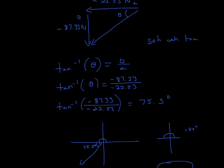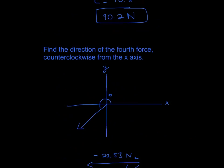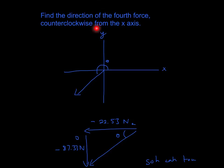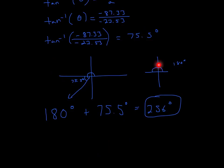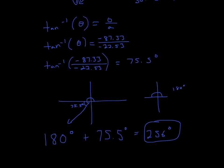Always ask: what does this answer mean? We found the small reference angle of 75.5 degrees, but the problem wants the full counterclockwise angle from the x-axis. Going back to the graph, a semicircle is 180 degrees, so we add: 180 plus 75.5 equals 256 degrees. That's three sig figs, and that's our final answer. Make sure your calculator is in degree mode, because that will affect the answer. I hope that helped — thanks for watching.